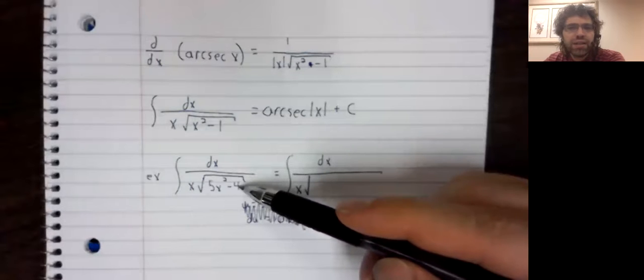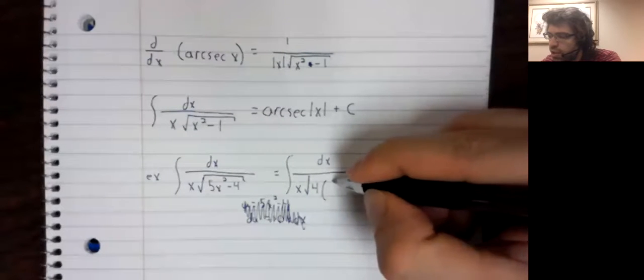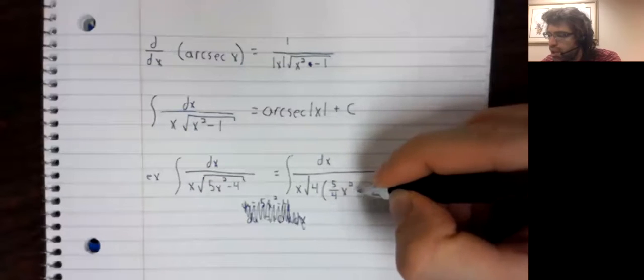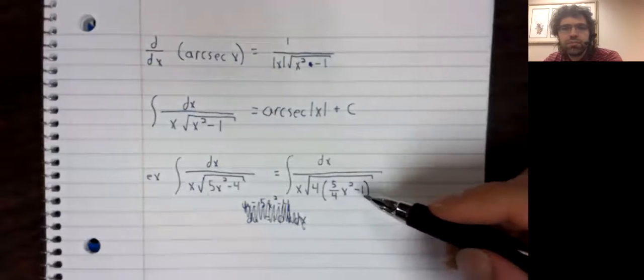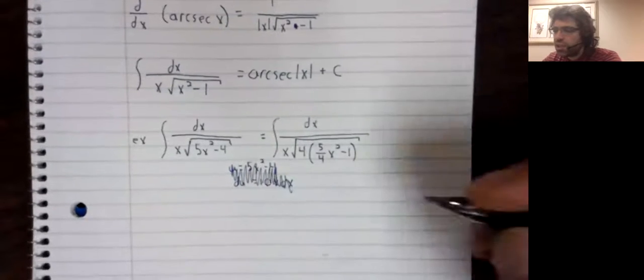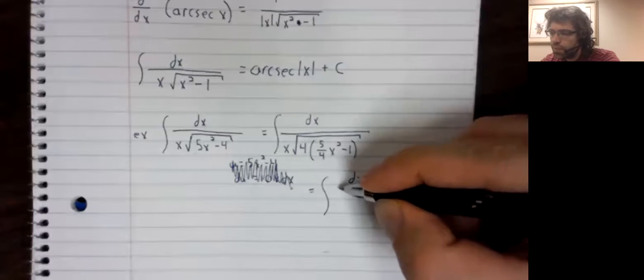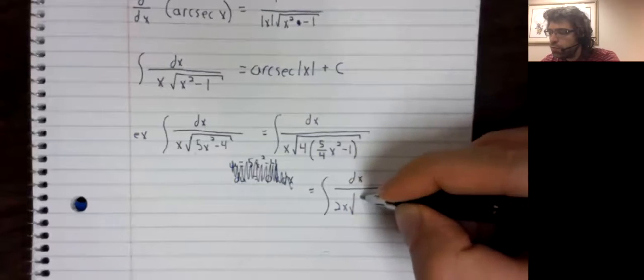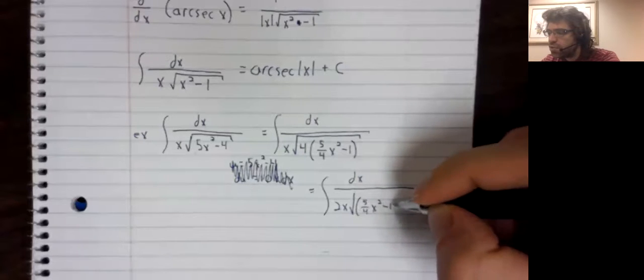5x squared. That's the square root of five times x, that whole thing squared. But we need a one here, not a four. And using the same trick we have used a number of times, we'll factor a four out to make this a one. Then this four pulls nicely out of the square root.